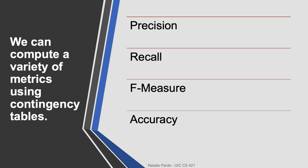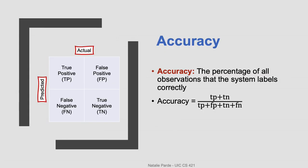Using our two-by-two contingency tables, we can compute precision, recall, F-measure, and accuracy using simple formulas. For accuracy, we're computing the percentage of all observations that the system labels correctly. So the correct quadrants of our matrix are the true positives and the true negatives. We'll sum those and then divide them by the sum of all four quadrants.